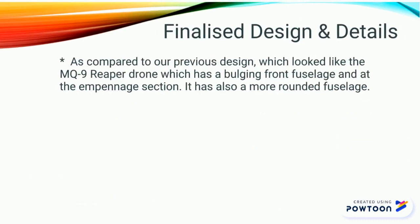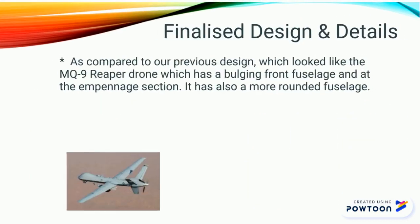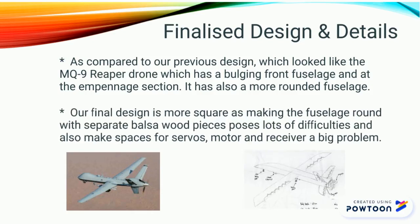For our previous design, it has a bulge on its front and empennage section. Overall, it has a more rounded fuselage. However, for our final design, our fuselage uses a small square cross-section, as the round fuselage poses challenges for fabrication and space for components.